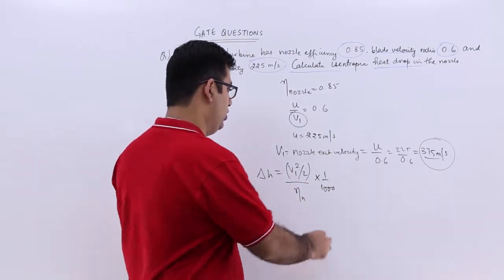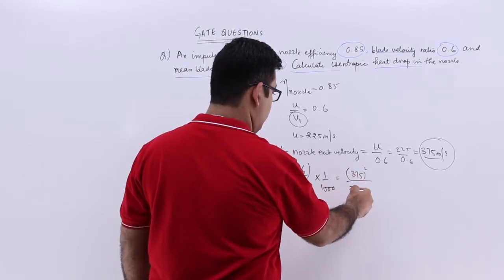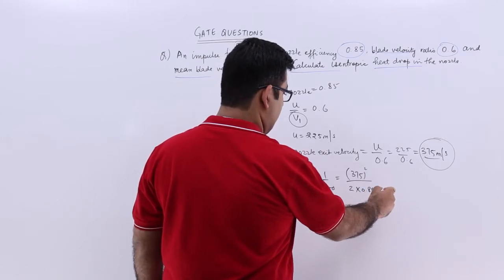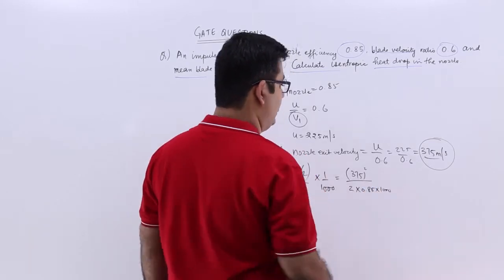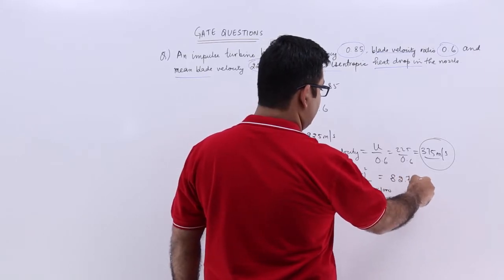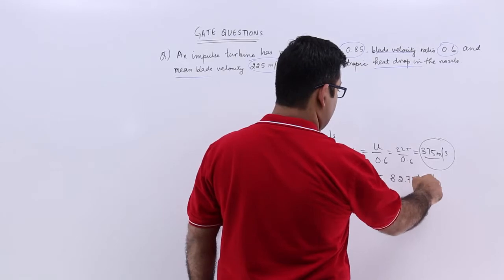So you have 375 squared divided by 2 times 0.85 times 1000. This gives you a value of 82.72 kilojoules per kg.